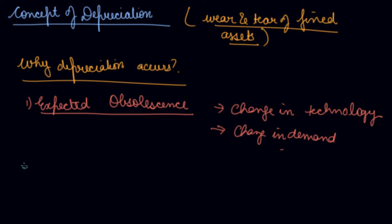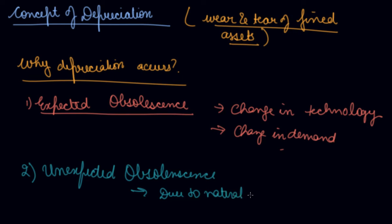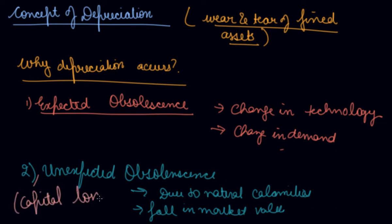The second one we have is unexpected obsolescence. That is due to the fall in the market value of an asset, if there is recession. Loss of market value of fixed assets owing to unexpected obsolescence is also known as, you can also call it as capital loss.